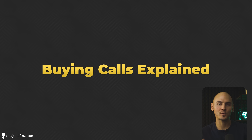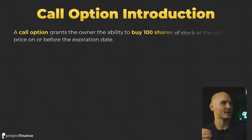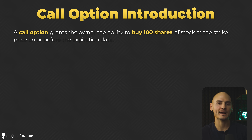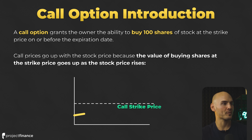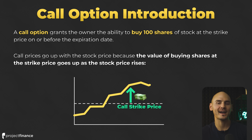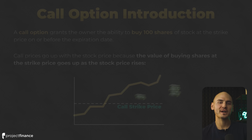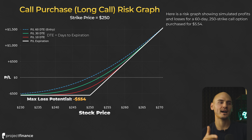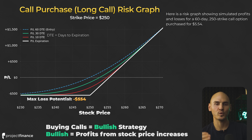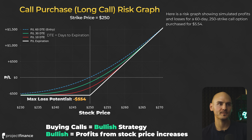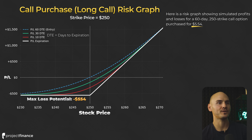Now that we've gone through the key terms, let's go through some more call option examples, specifically buying call options. A call option grants the owner the ability to buy 100 shares of stock at the strike price on or before the option's expiration date. Call prices go up with the stock price because the value of buying shares at the fixed strike price goes up as the stock price rises. The risk graph tells us how much we can make or lose on a specific option position. In this specific example, we're looking at a 250 strike call option with 60 days until it expires, purchased for $5.54, meaning we're paying $554 for this option.